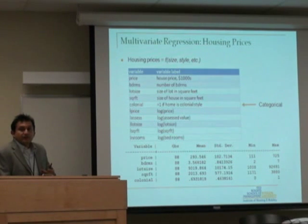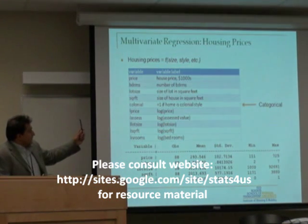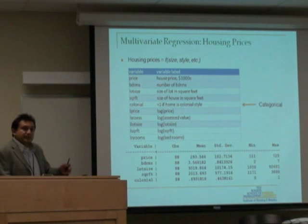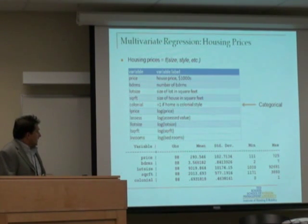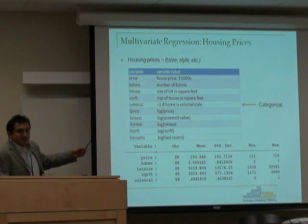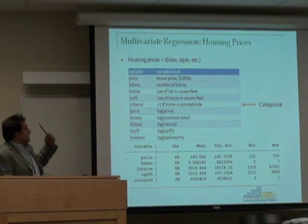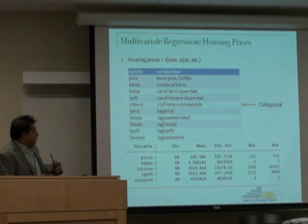My assumption is that the lot size is important, but what is more important is the livable area and the size of that. We also have an explanatory variable which is categorical — colonial. If the house is built in a colonial style, it is identified as 1, and 0 otherwise. We also have some variables transformed using the log transformation, including the price of the house, the assessed value, the lot size, and the square footage of the unit — all expressed as logs.